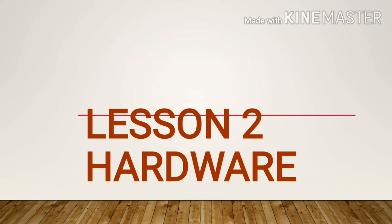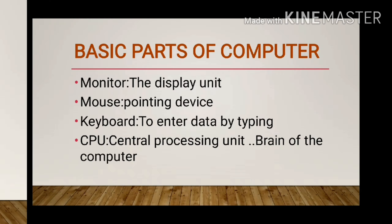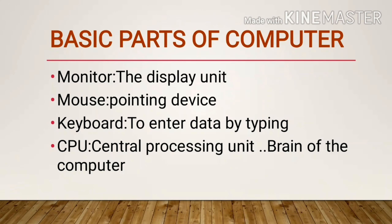Let us discuss: monitor, CPU, keyboard, and mouse, and what are the functions of each. First one is the monitor — monitor is the display unit of the computer. Mouse is used to point things to a particular point on the screen, so this is known as a pointing device.